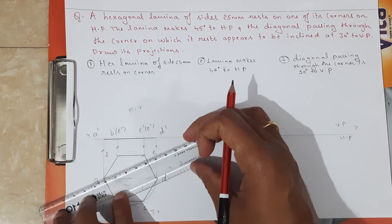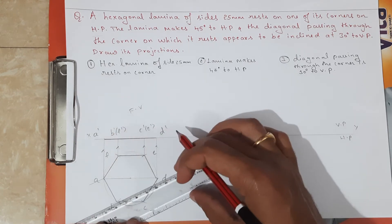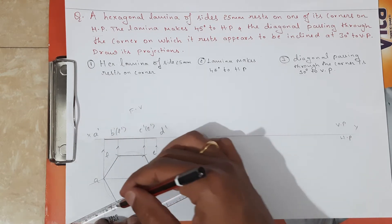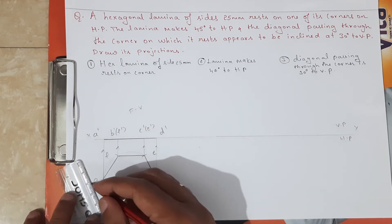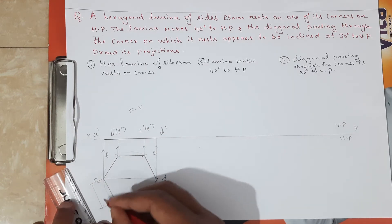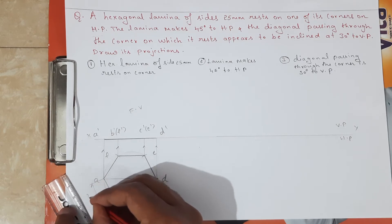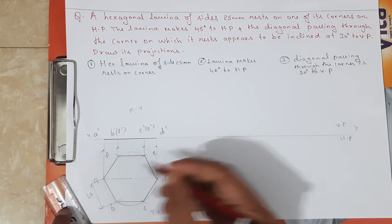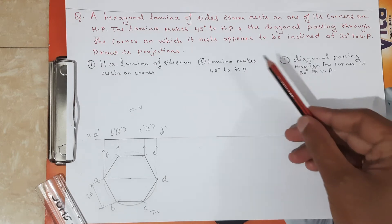You have to mention the dimension — that is very important. This dimension is 25 mm. Only the hexagon must be dark whereas the circle must be very thin.